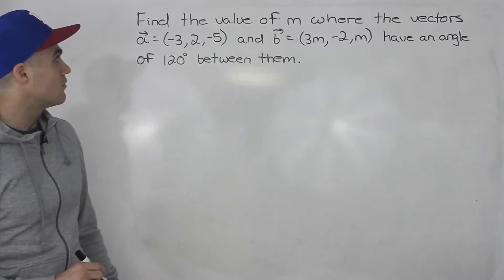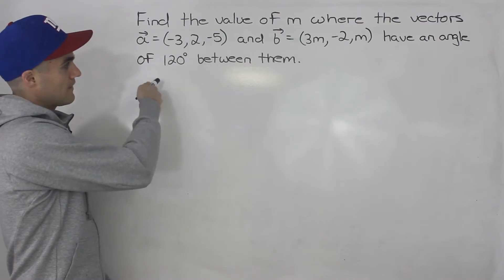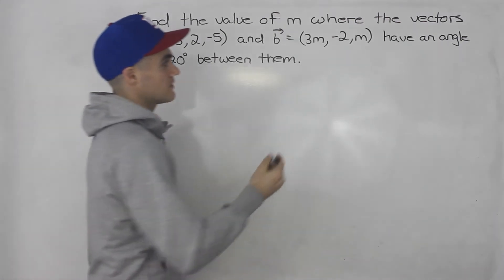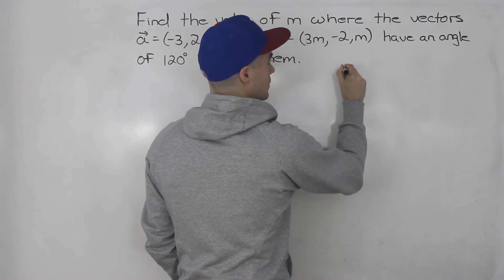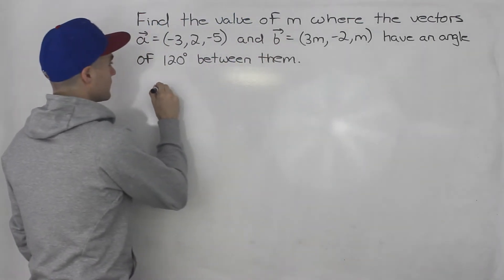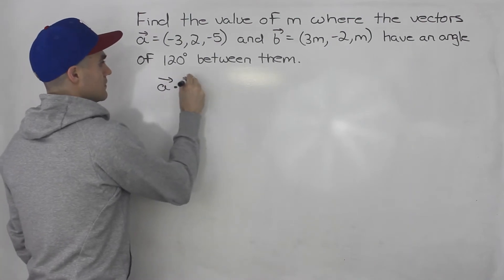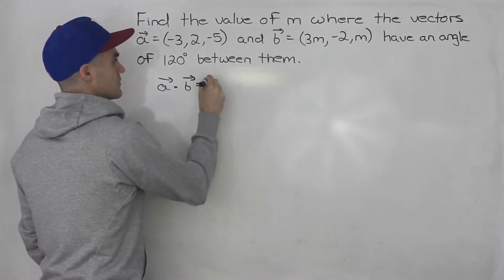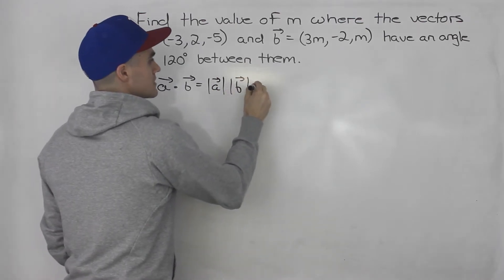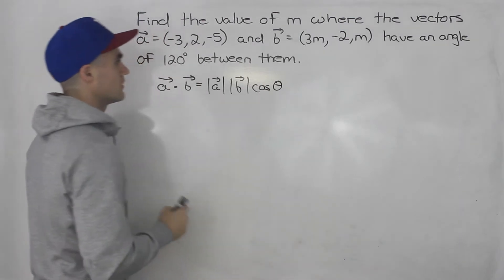Because we have both of these vectors in component form and the angle is 120 degrees between them, we can relate them with the dot product. We know that a dot b is going to be the magnitude of a times the magnitude of b times cos theta, the angle between them.